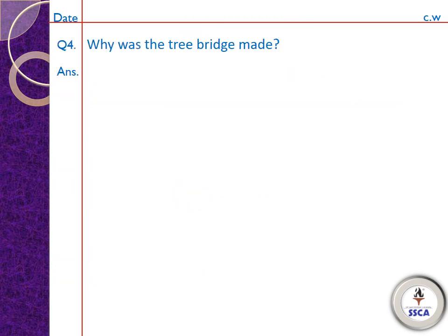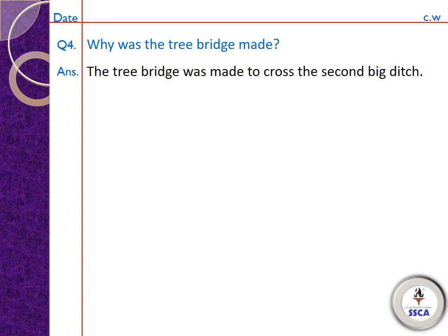Question number 4: 'Why was a tree bridge made?' — Tree bridge kyun banaya gaya tha? The tree bridge was made to cross the second big ditch. Tree bridge is liye banaya tha taake wo second big ditch cross kar sakein. Because the second big ditch was wider than the first, the lion could not jump over it. So scarecrow gave them the idea to cut a tree and let it fall to the other side, and then they could cross through it.